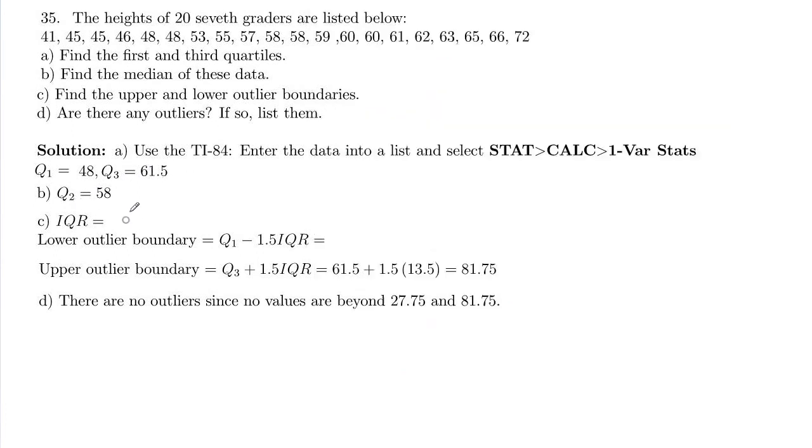Part C, they want our IQR, which is Q3 minus Q1, so that's going to be 61.5 minus 48, which is 13.5 if you compute that on the calculator.